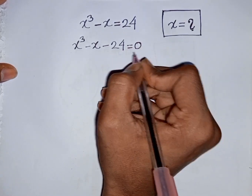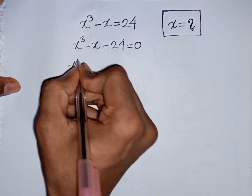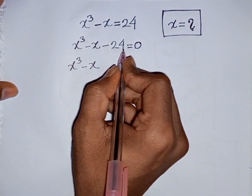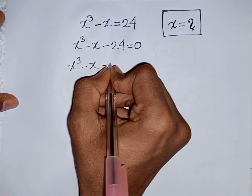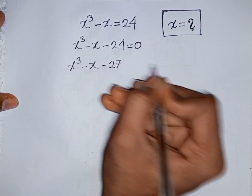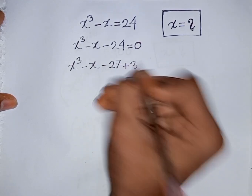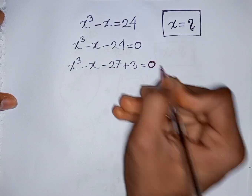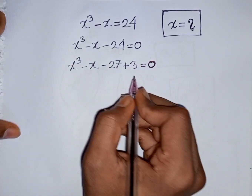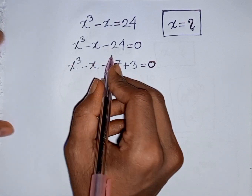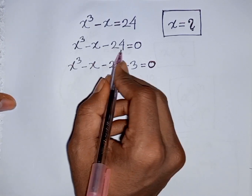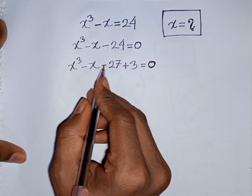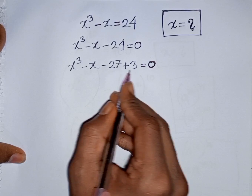Now you can write x³ minus x minus 24, where minus 24 can be written as minus 27 plus 3, so this equals 0. How to understand this? Pay attention: the nearest cubic number to 24 is 27, so you can write minus 24 as minus 27 plus 3.